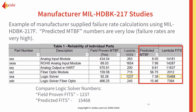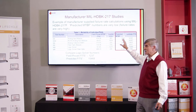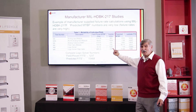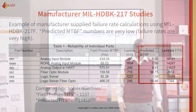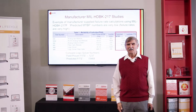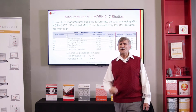As an example, this data sheet provided to Exeter to do SIL calculations had not only field failure estimates, but it also had MIL-217 predictions. Look at the difference between these two numbers: the manufacturer's warranty return estimate was 1,237 FITs, while the MIL-217 prediction was 15,468 FITs. That's over an order of magnitude difference. This is not good.